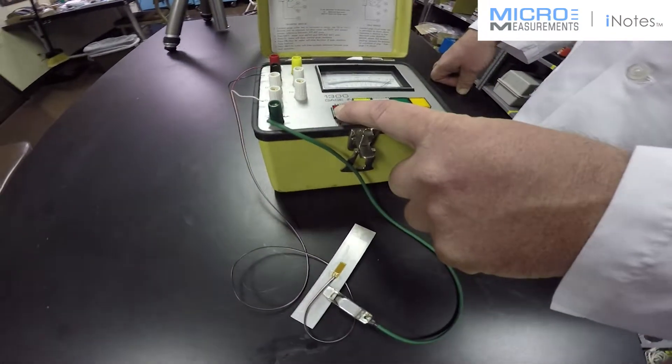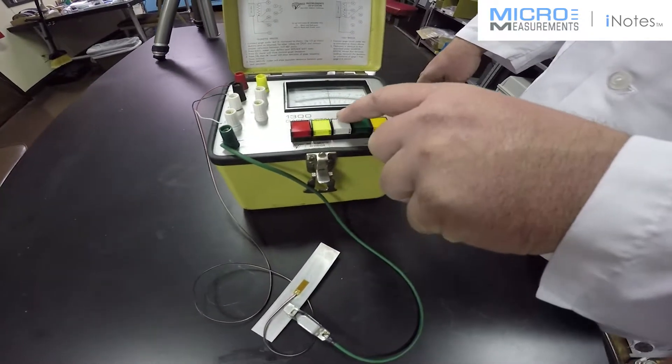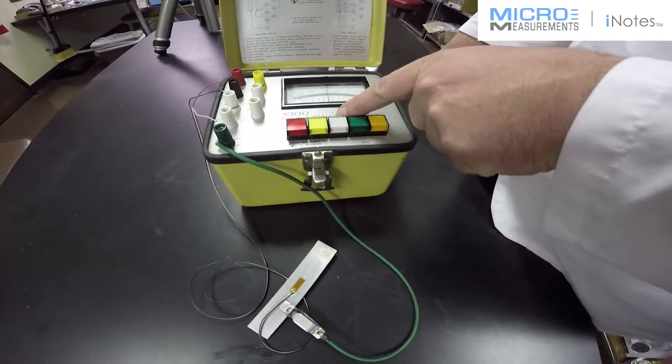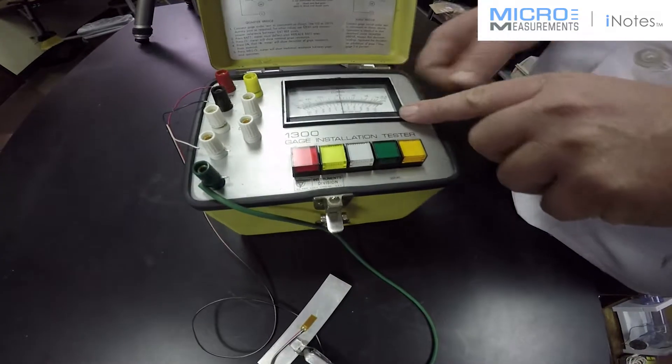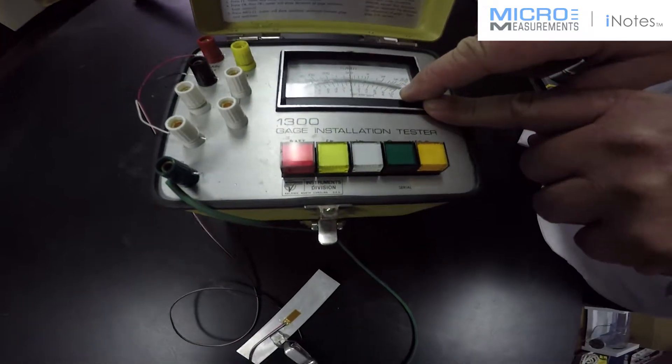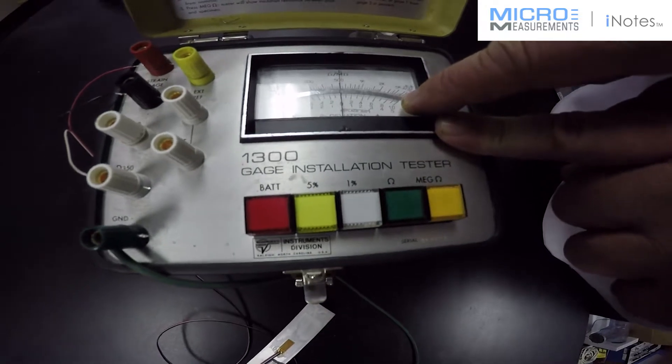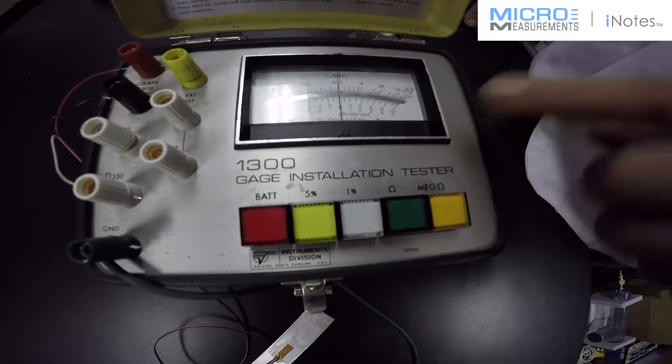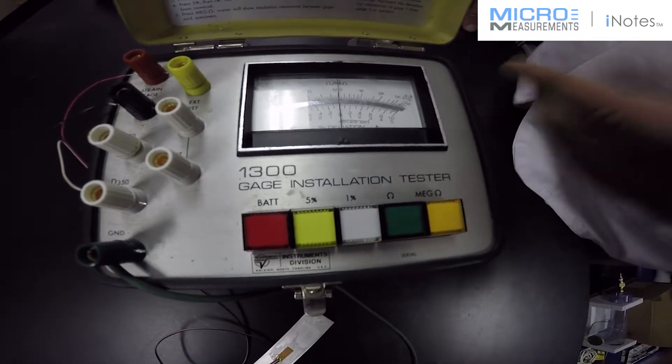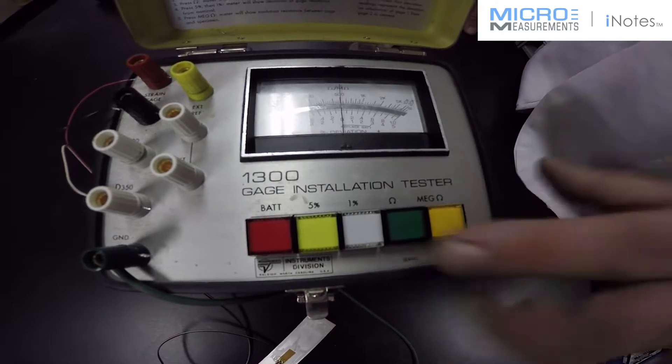I'll show you how you can QC a strain gauge with this. Basically, first we want to make sure our battery is working. Second, this is a 5% range and a 1% range. So, looking at the scale, the 5% range is at the bottom, the 1% range is the next one up. This is just going to tell me the tolerance - how close to 350 is my strain gauge?